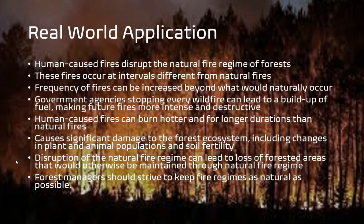Human-caused fires, which can occur accidentally or intentionally for land management purposes, disrupt the natural fire regime of forests. These fires may occur at intervals different from natural fires, leading to an increase in the frequency of fires and a buildup of fuel on the forest floor, making future fires more intense and disruptive. Human-caused fires can burn hotter and for longer durations than natural fires, causing significant damage to the forest ecosystem, including changes in plant and animal populations and soil fertility. The disruption of the natural fire regime can also lead to the loss of forested areas that would otherwise be maintained naturally.